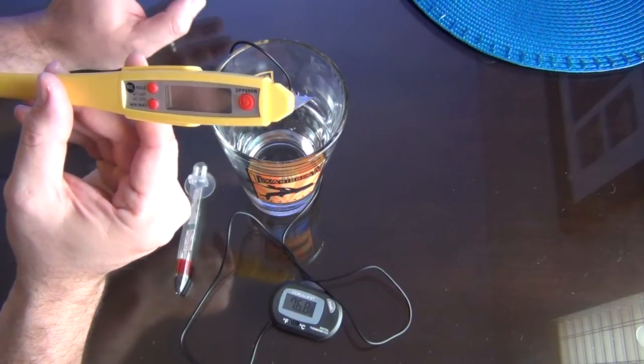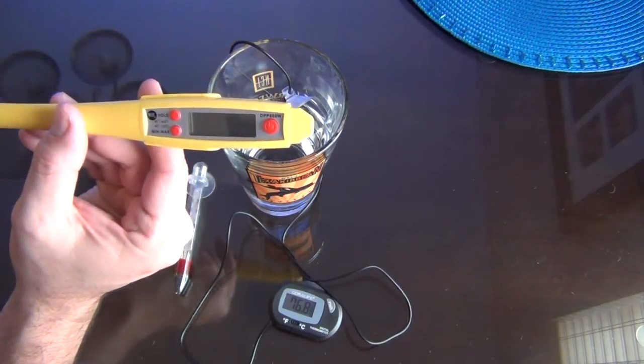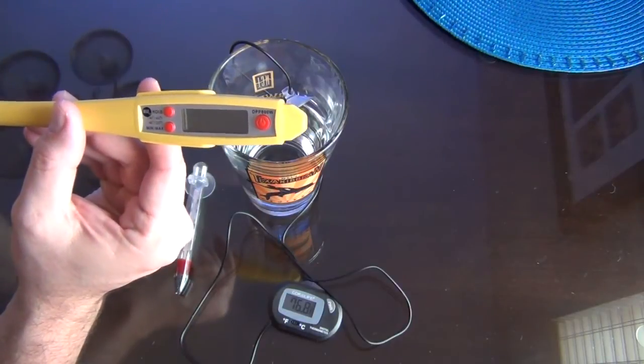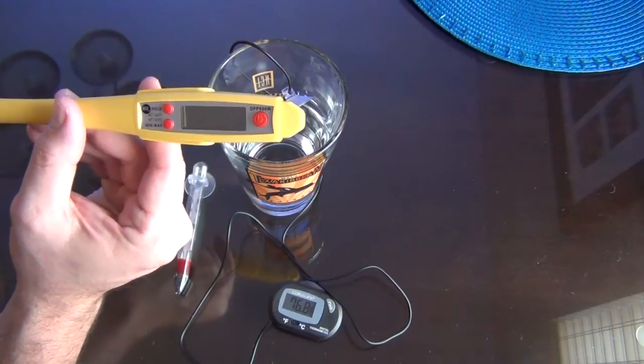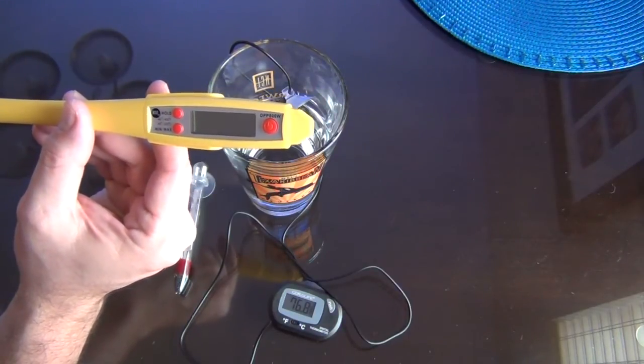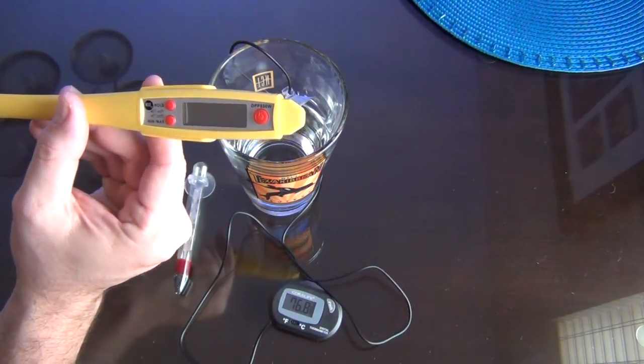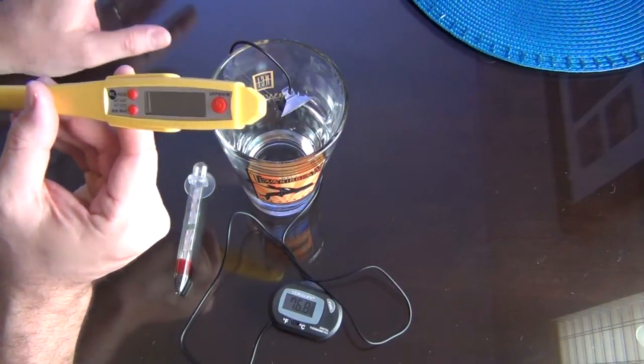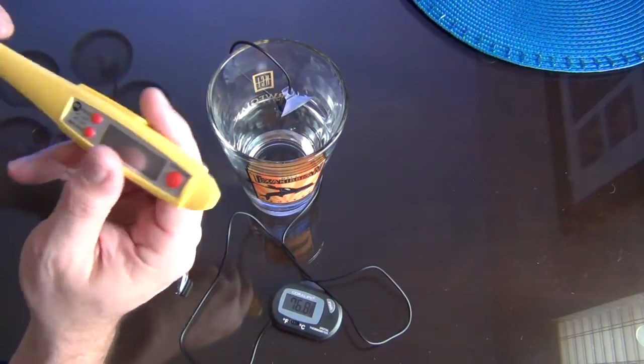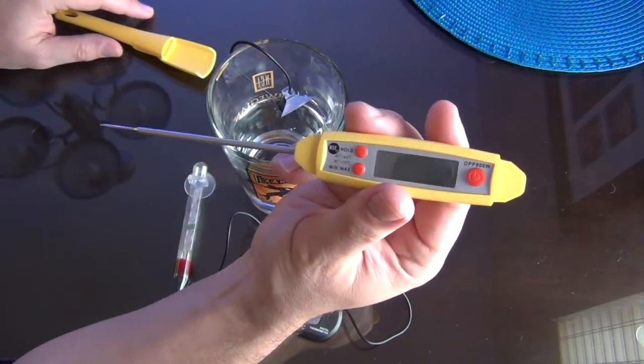What I found was my display tank temperature, my quarantine system, my saltwater mixing station temperature, they were all off. Every one of them, the chillers, none of them were right. Some of them were upwards of a degree, some of them were half a degree, but every one of them was different and every one of them was outside the margin of error of this thing.